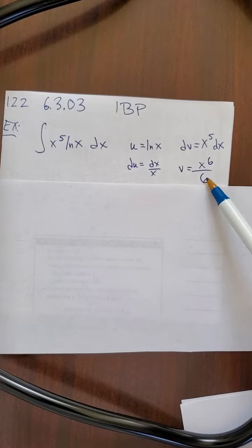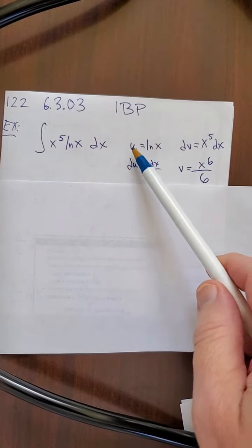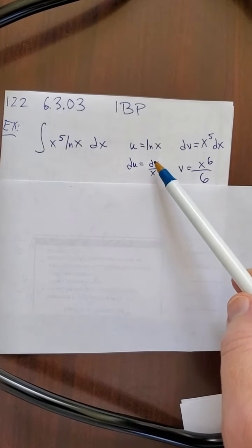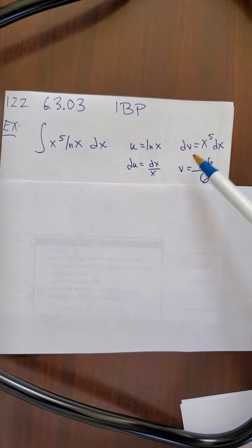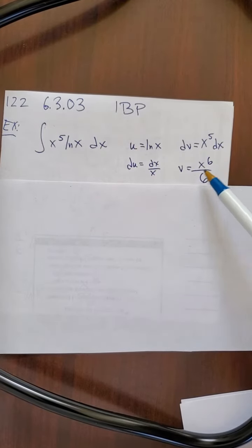Notice that the u did not have any dx, but the du has a dx. The dv had a dx, but the plain v does not have a dx, and that makes sense.